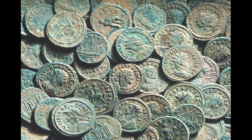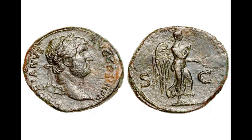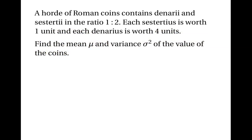My first example is to do with Roman coins. There were all types of Roman coins, but I'm going to concentrate on two: the denarius, which was a silver coin, and the cistercius, which was a brass coin. Let's imagine that a hoard of Roman coins is found containing only denarii and cistercii in the ratio one to two. You also need to know that if a cistercius is worth one unit, then a denarius is worth four units. First, let's find the population mean and population variance of the value of the coins.